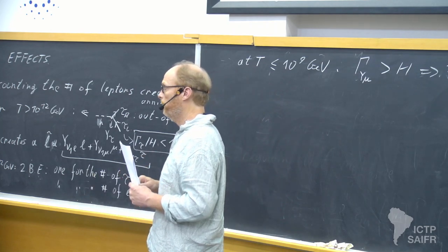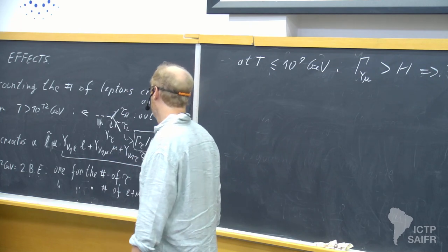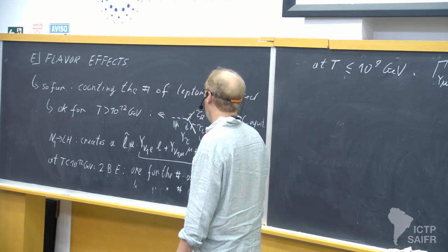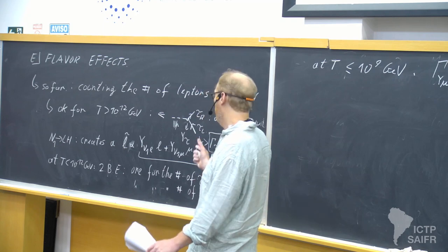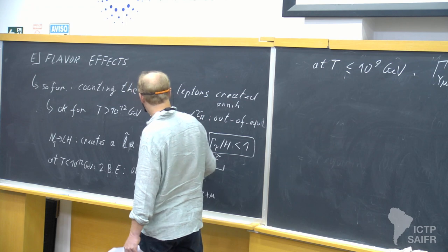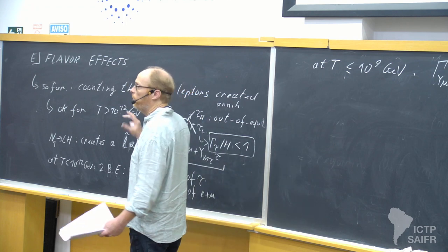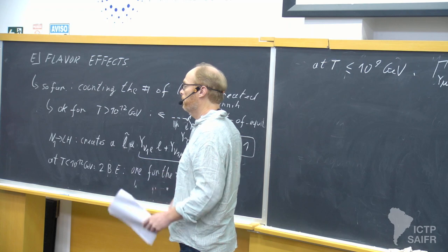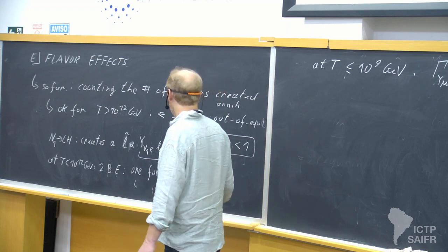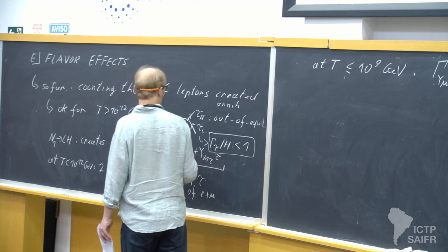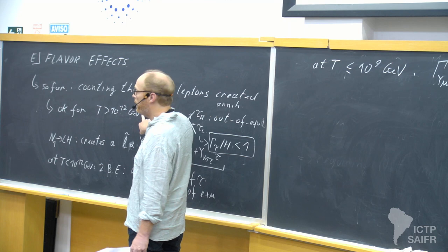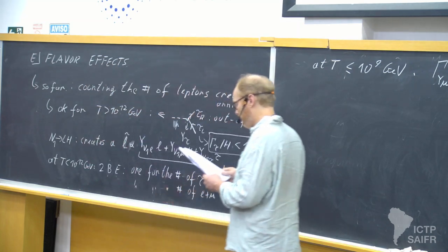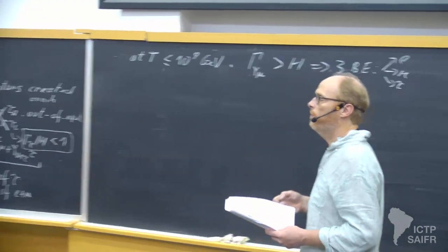A question was raised: strictly speaking wouldn't you need a density matrix approach here, since the state is coherent and those interactions break the coherence? If you really want to do it well, you should use a density matrix. Taking two or three Boltzmann equations and going to large temperatures you don't get exactly the same, but it's a good approximation.